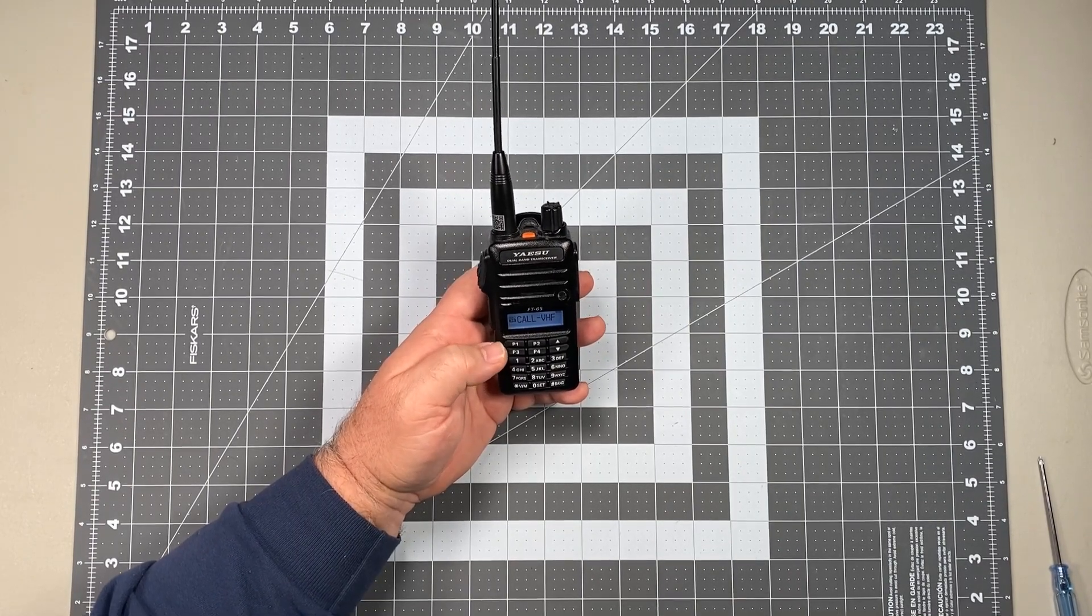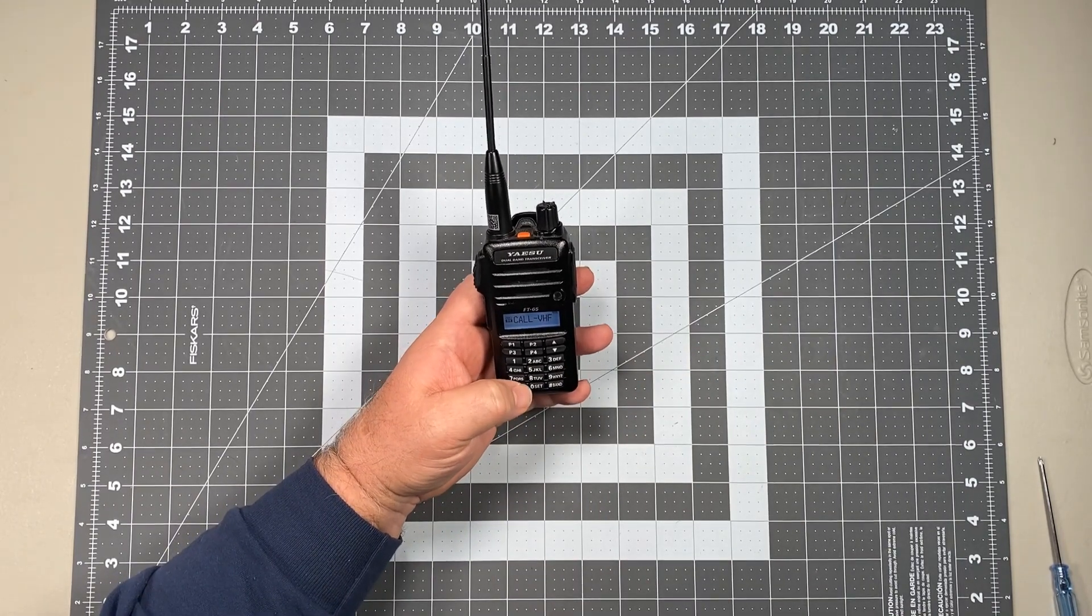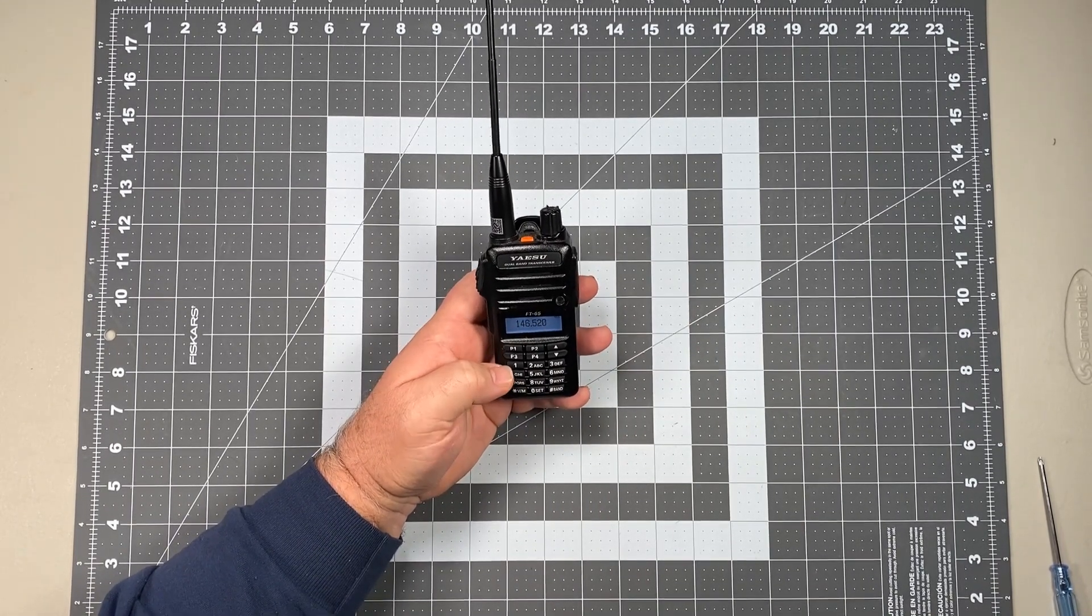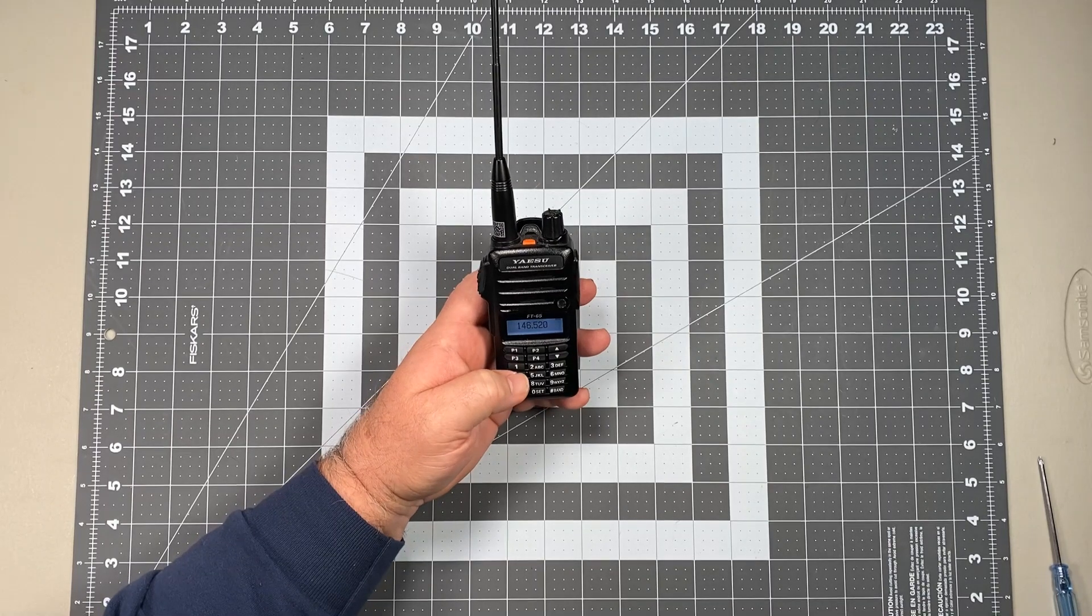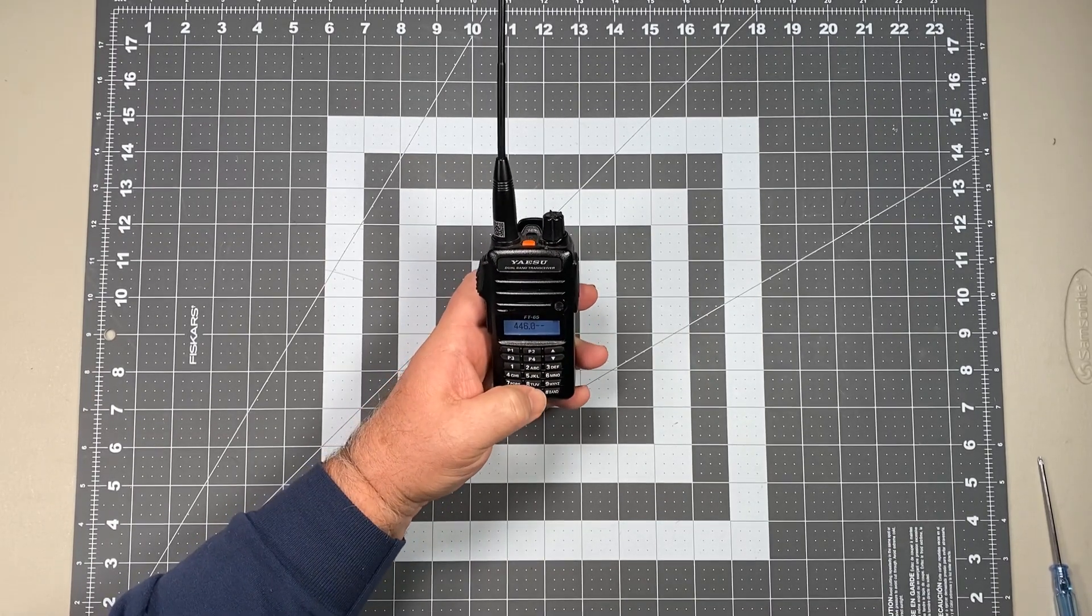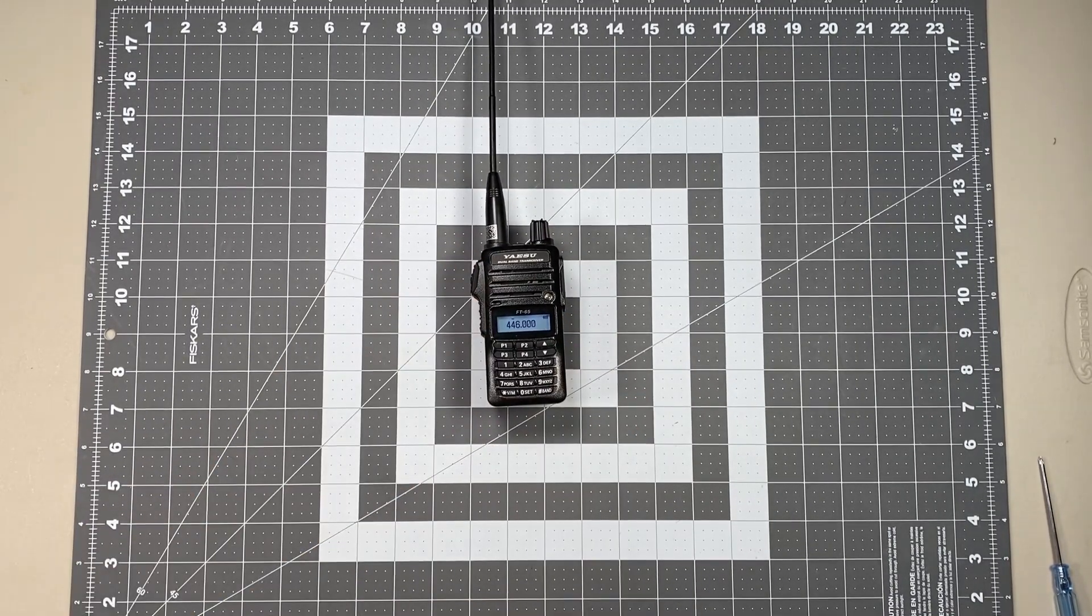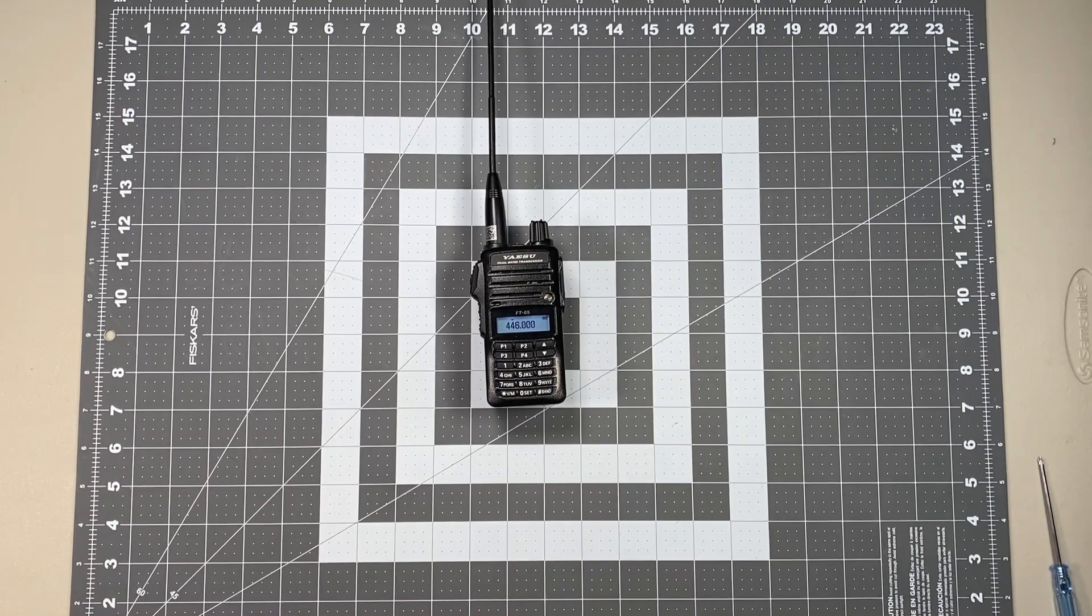So let's do that one more time, but this time let's not do the alphanumerics. Let's go back to VFO mode and here we're going to go 446.000.